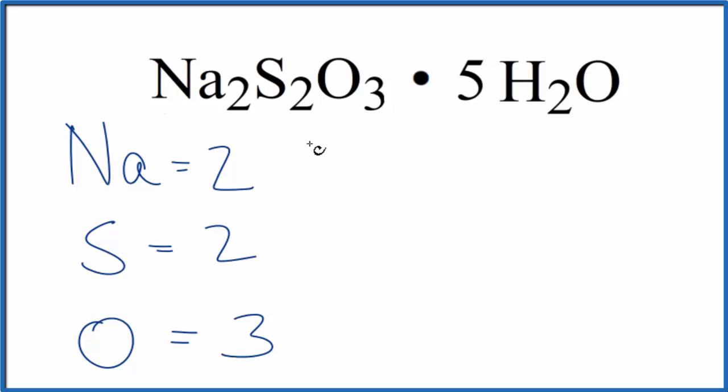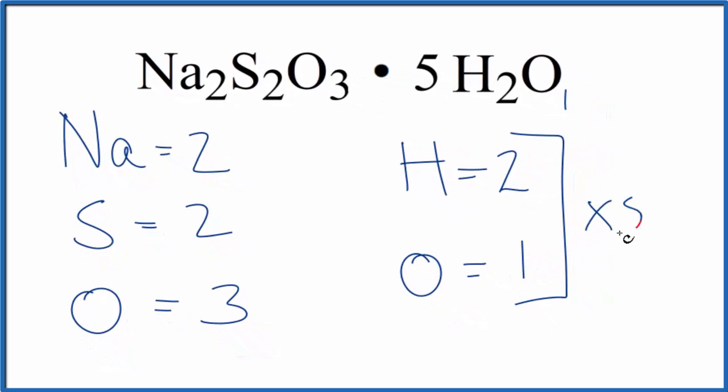a total of seven atoms here in sodium thiosulfate. For the water we would have hydrogen and oxygen, and the two means two hydrogens. It's not written but we assume the subscript on the oxygen to be one, so we have three. And we're going to multiply this times five because this five means we have five water molecules around the sodium thiosulfate.